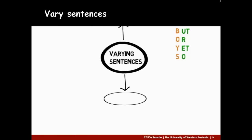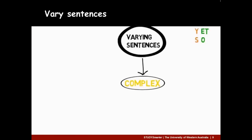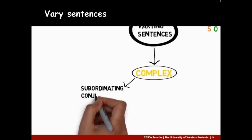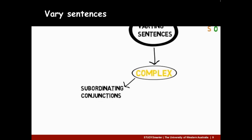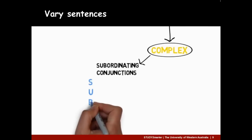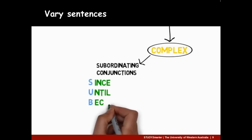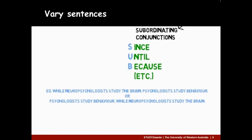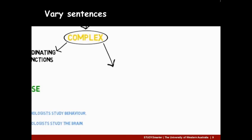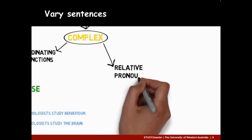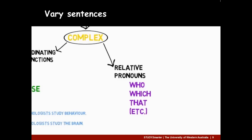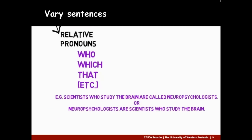Or we can create complex sentences. Complex sentences can contain subordinating conjunctions. If you think of the word 'sub', it will remind you of some examples of subordinating conjunctions, like since, until and because. Subordinate clauses can come before or after independent clauses. We can also join clauses using relative pronouns, like who, which and that. We can put relative clauses after subjects or objects.